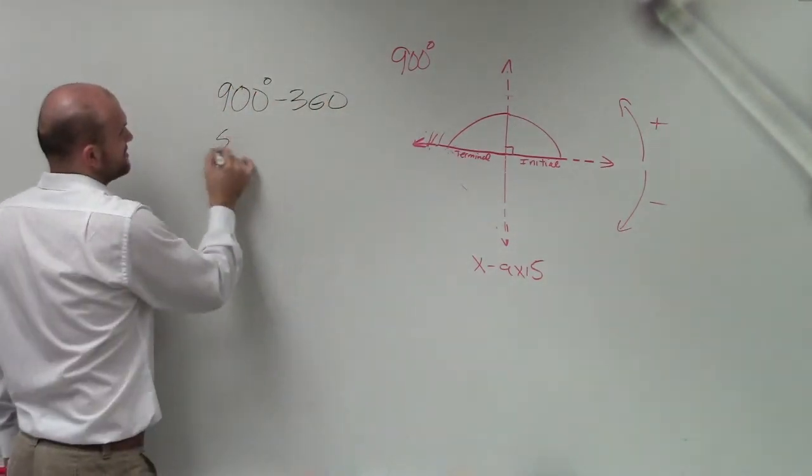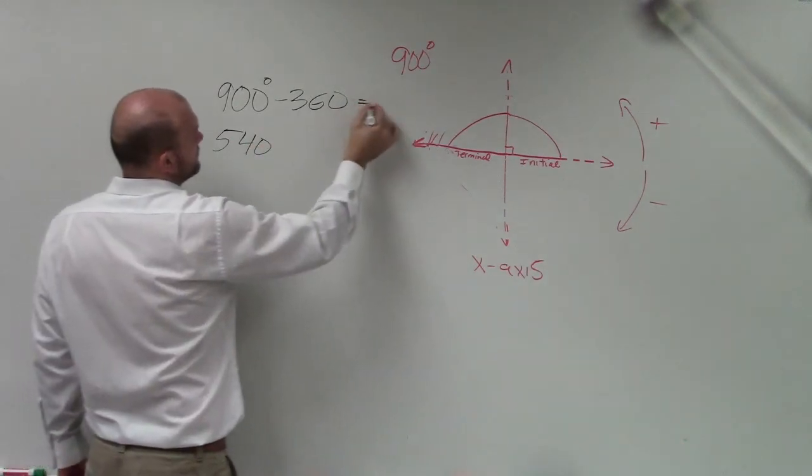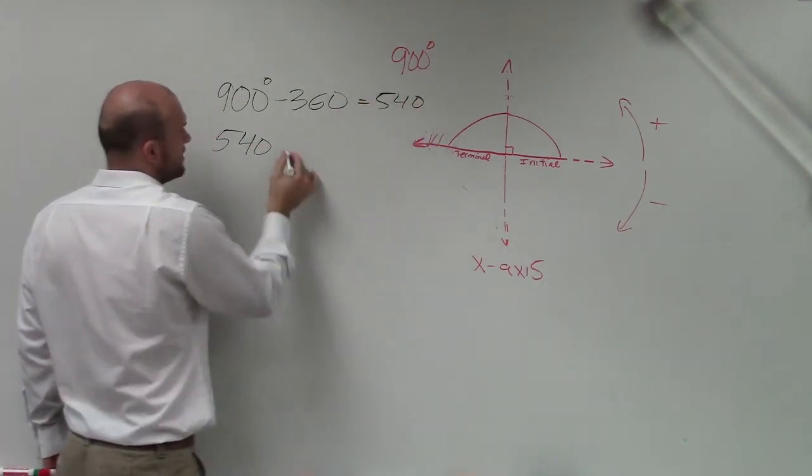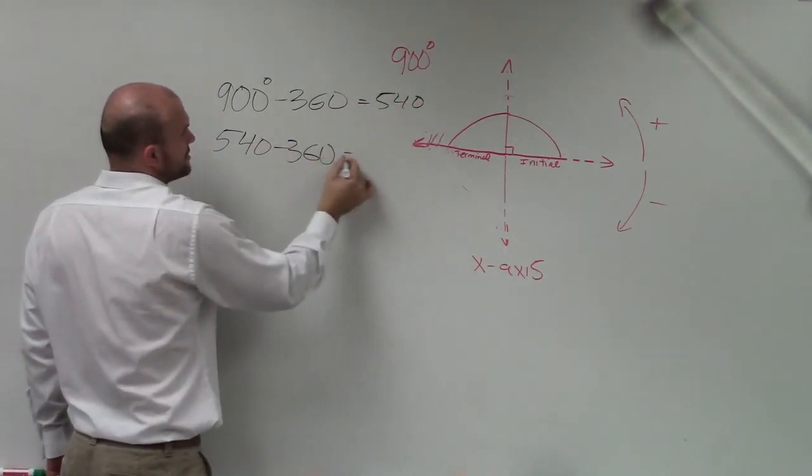So I just keep on subtracting. 360 is 540. Then I subtract 360 again, which equals 180.